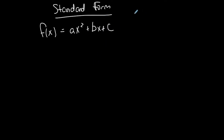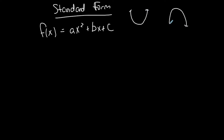Same idea. If it's a quadratic, then either it's a parabola that opens up or opens down, and the leading coefficient is still going to tell me whether it opens up or opens down. So if the leading coefficient is positive, it opens up. If the leading coefficient is negative, it opens down.